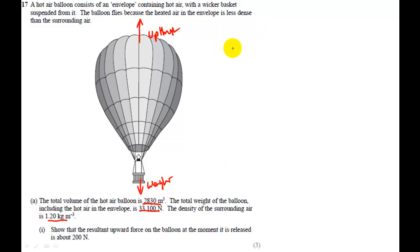So I'm going to say the resultant force will just be equal to up thrust minus weight. Now the weight we've been given 3 3 1 0 0 newtons. The up thrust we're going to have to calculate.